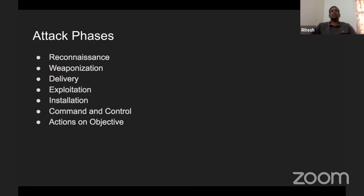Installation means that once the vulnerability is exploited, you perform your objective — installing auxiliary tools or a vehicle to get the money out of the bank. Command and control means you are controlling the premises. Then the next phase is actions on objectives — what action you want to perform depends on your motive. Getting the money out might not be the objective; destroying it could be. So the objective defines the entire structure.